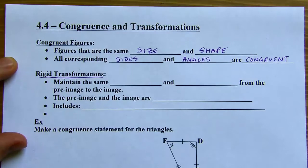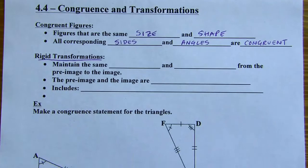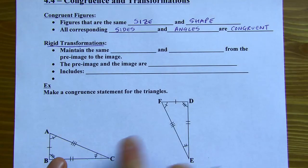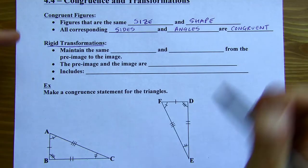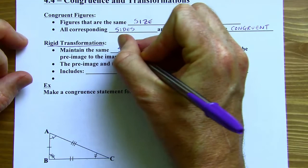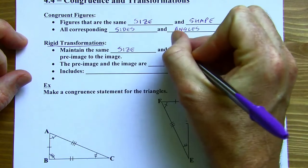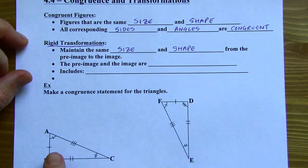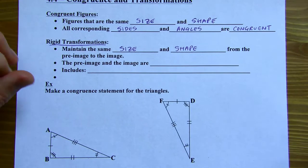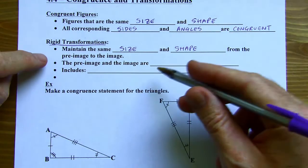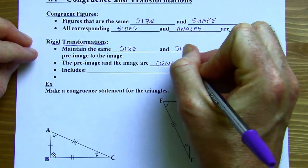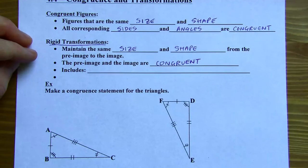Rigid transformations mean going from one figure to another — like these triangles here — in a way that maintains the same size and shape from the pre-image to the image. Since they're the same size and shape, the pre-image and the image are congruent. That's what congruent figures means.